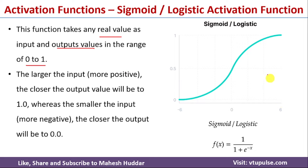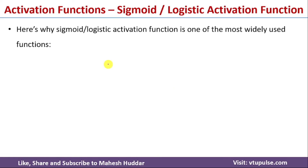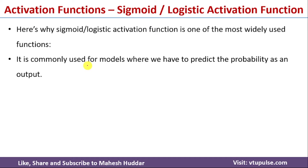If the input is on the higher side, the output will be 1. For example, if the input is 6 the output will be equivalent to 1. If the input is on the lower side — a negative value — the output will be towards 0. The sigmoid or logistic activation function is one of the most widely used activation functions because it is commonly used for models where we want to predict the output as probabilities, with values in the range of 0 to 1 like 0.1 or 0.2.